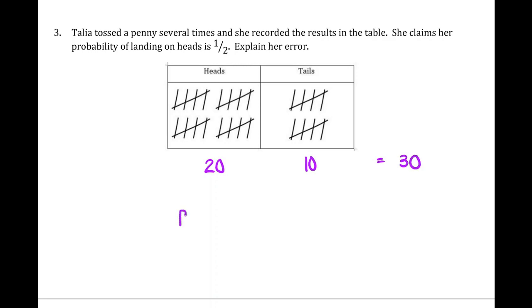The probability of landing on heads based on Talia's experiment would be twenty out of thirty, which reduces to two-thirds.